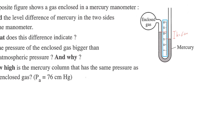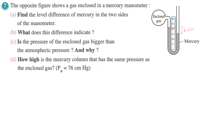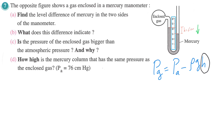Let's say something else — what does this difference indicate? The difference indicates that the pressure of the enclosed gas is higher than the air pressure. Because in this case, the pressure of the gas equals the atmospheric pressure minus Rho G H. This difference means the pressure of the enclosed gas is not the same as the atmospheric pressure. Is the pressure of the enclosed gas bigger than atmospheric pressure? No.